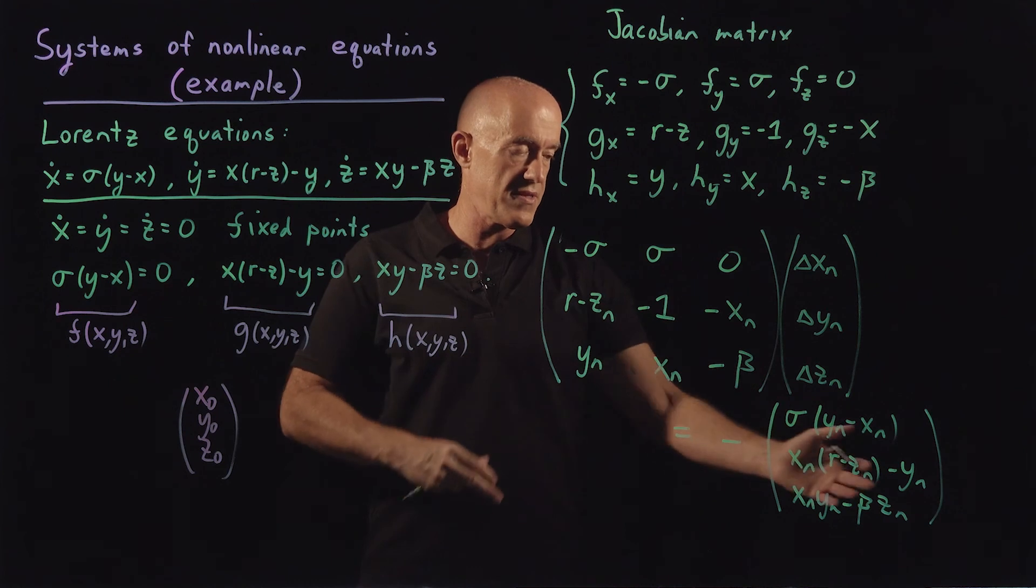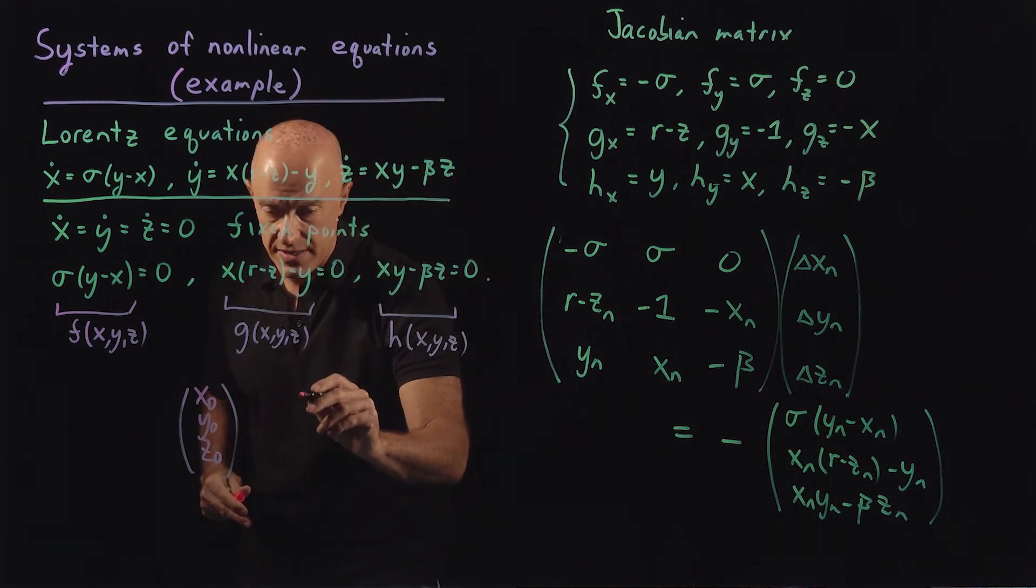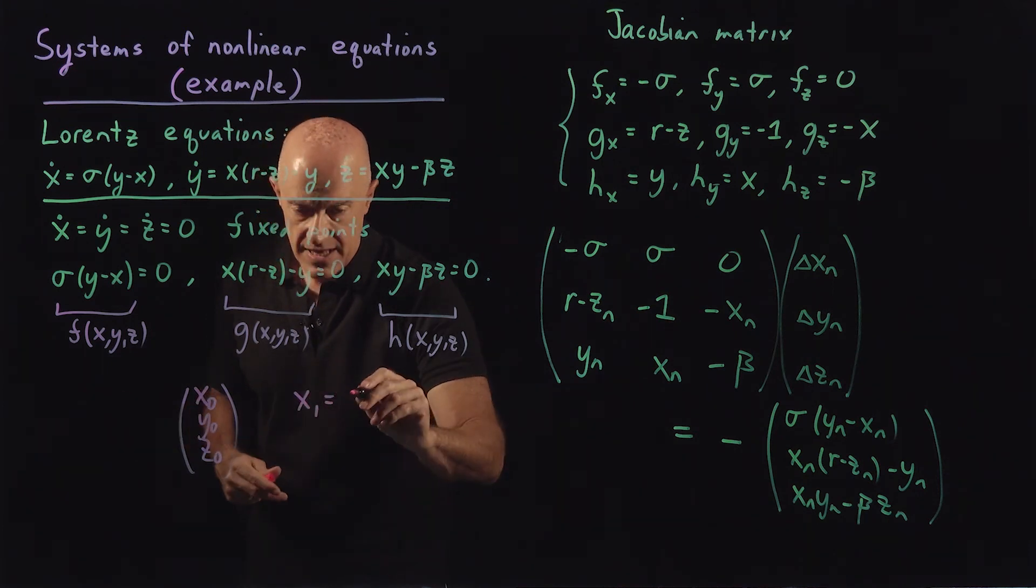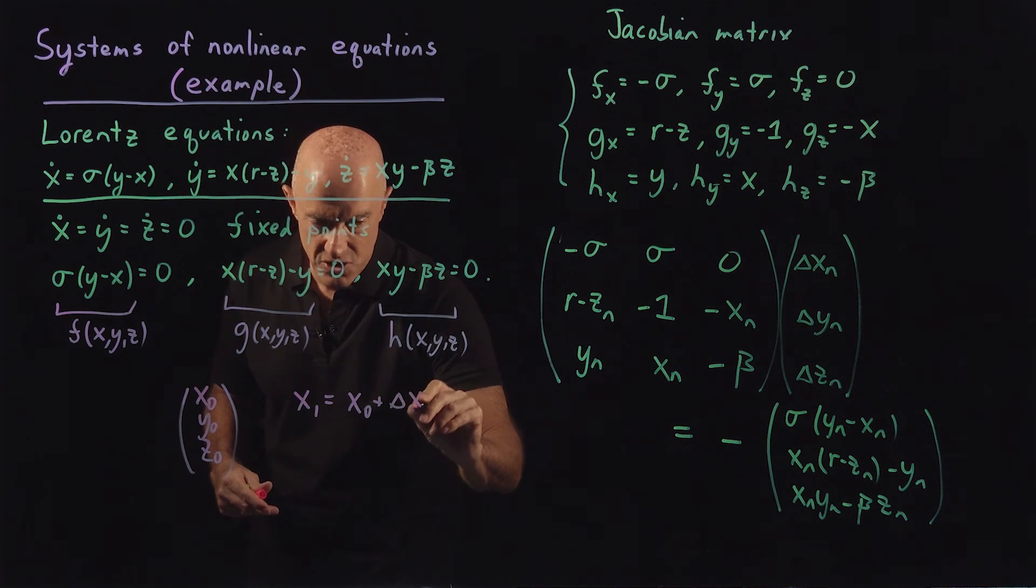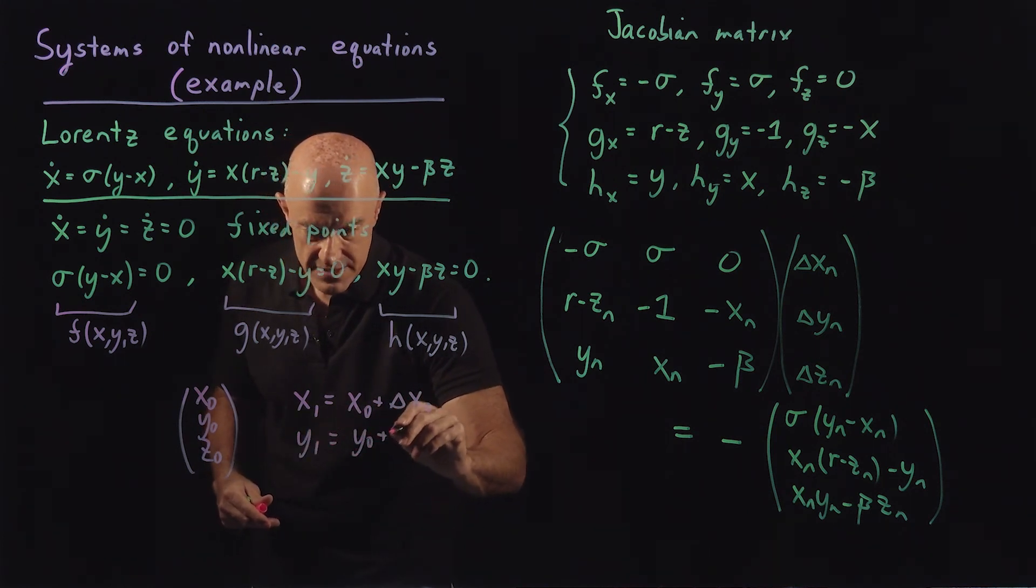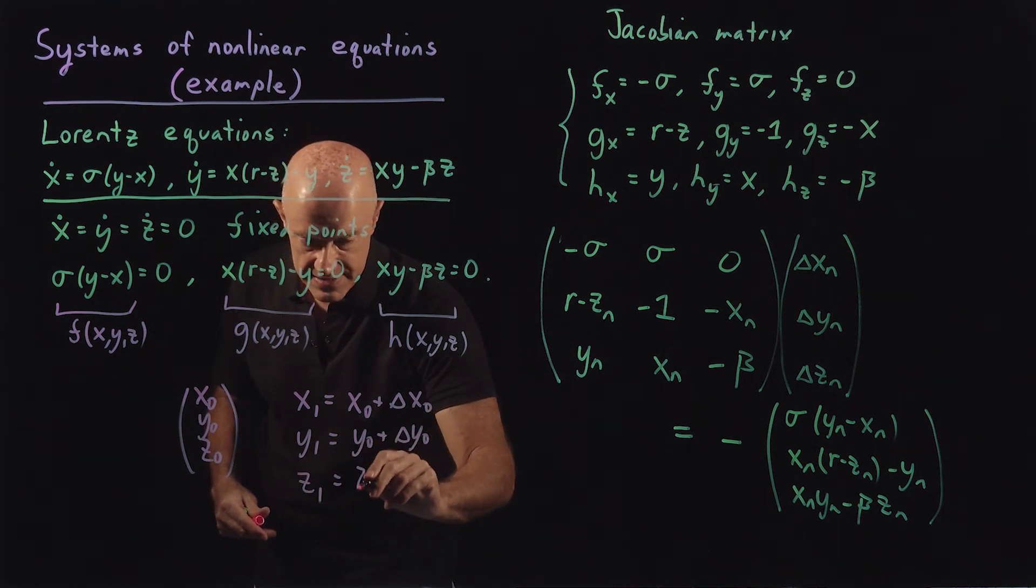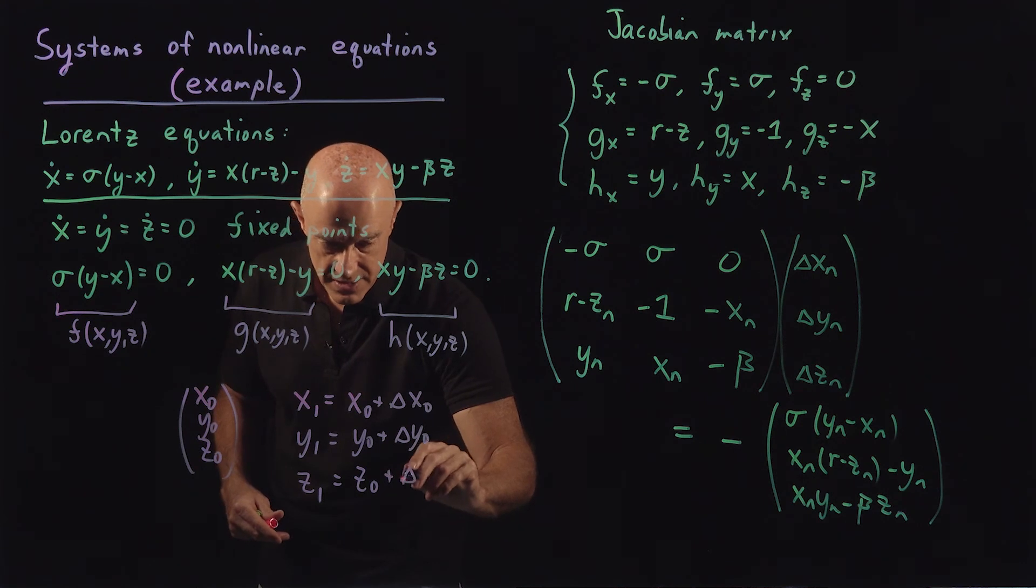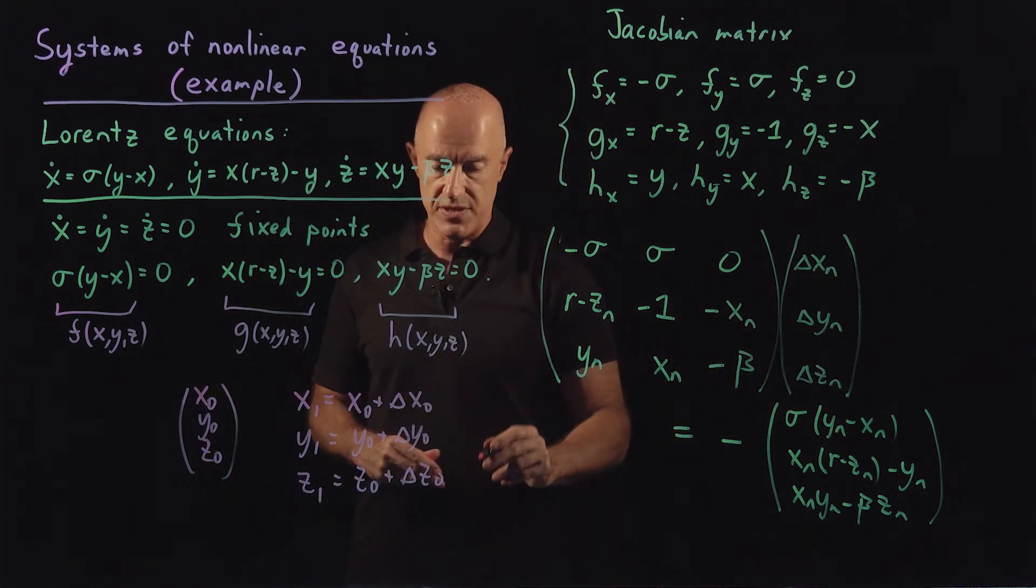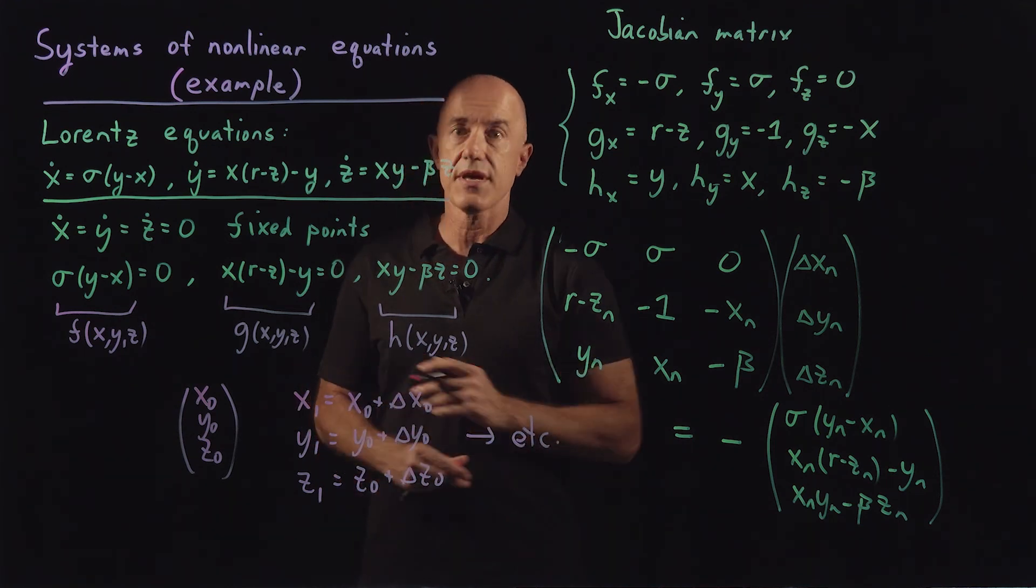And then you get x_1 would be x_0 plus delta x_0. y_1 would be y_0 plus delta y_0. And z_1 would be z_0 plus delta z_0, which is the solution of the matrix equation. And then you keep going, iterating.